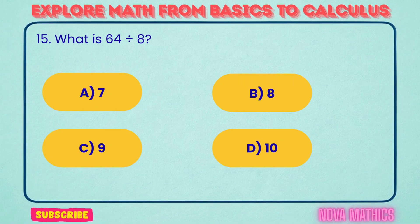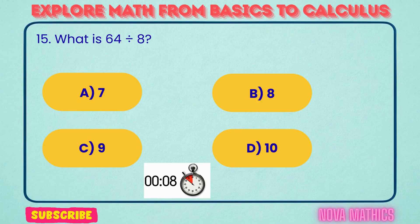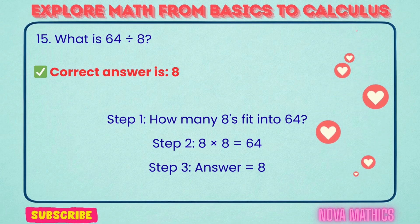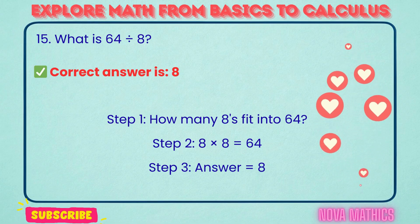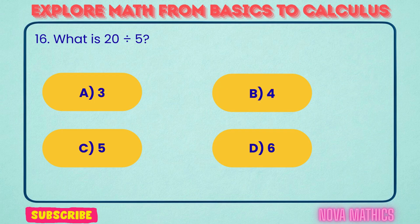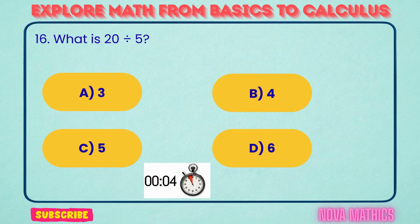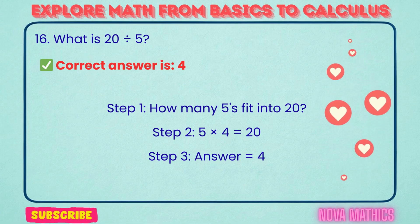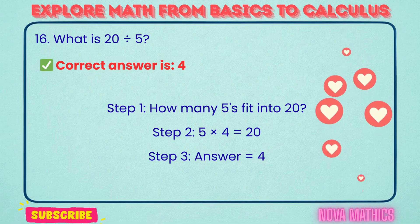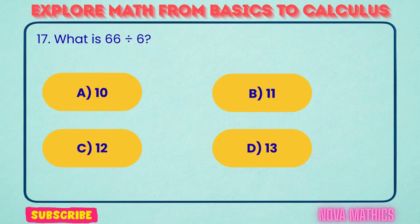15. What is 64 divided by 8? Correct answer is 8. 64 divided by 8 equals 8. We find this because 8 times 8 is 64.